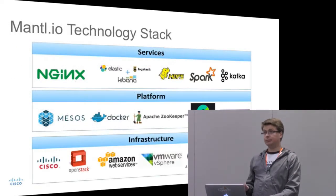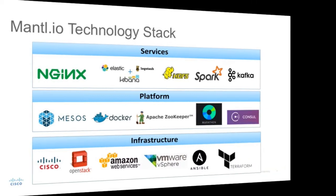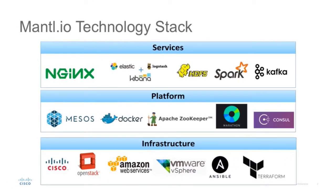Here's a brief high-level overview of some of the technologies based on logos that play within Mantle — by no means comprehensive. Working from top to bottom, we have services: Nginx, full ELK Stack, Hadoop, Spark for machine learning, and Kafka for message queuing and alerting. In the platform layer, we have Mesos, Docker, Apache Zookeeper for consistency and service discovery, and Marathon and Consul for service discovery — again, not comprehensive. For example, Kubernetes uses etcd, and Mesos uses Consul and other tools. We've already done the integration work, so these are integrated in a unified technology stack and you don't have to make that choice — the choice is already made for you.